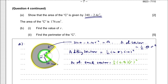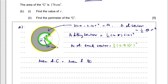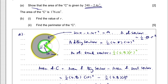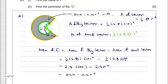The area of the C equals the area of the big sector minus the area of the small sector. So we compute one half times 4.8 times 10 squared minus one half times 4.8 times R squared, giving 2.4 times 100 minus 2.4R squared, which equals 240 minus 2.4R squared. This shows that the area of the C is given by 240 minus 2.4R squared. QED.